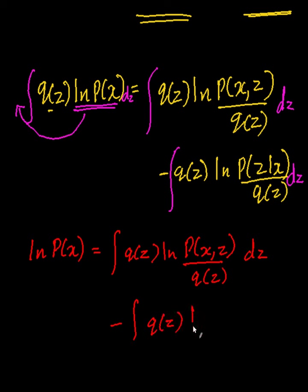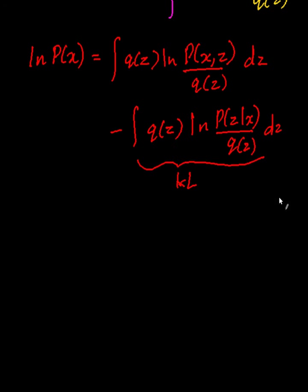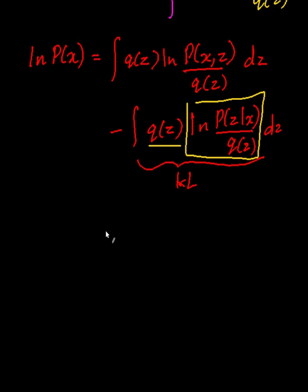The second term is called the KL divergence. Another way of thinking about it is: it's the expectation of that term under the probability distribution q. So this is really the final form of the EM algorithm. Now the question is why do we need this to optimize? We can rewrite those two terms: the first term here — we'll call it F(q, θ) — plus the KL divergence.